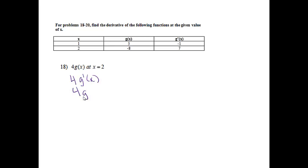And now we would like to find that at 2, so we're actually going to find 4g prime of 2. So g prime of 2 is 7, so we're going to do 4 times 7, and that gives me an answer of 28.